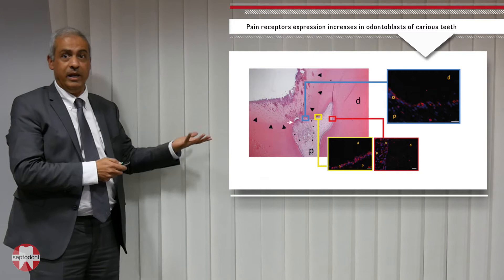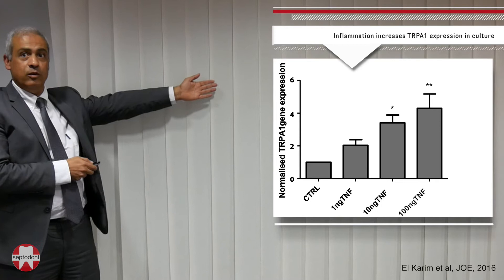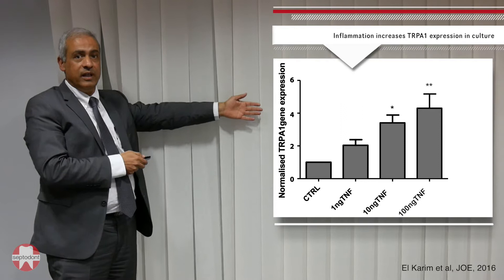We reproduced this in vitro. We took fibroblasts and applied a pro-inflammatory factor called TNF-alpha. There is a clear dose-response effect: the more TNF-alpha added, the higher the increase in TRP receptor expression.